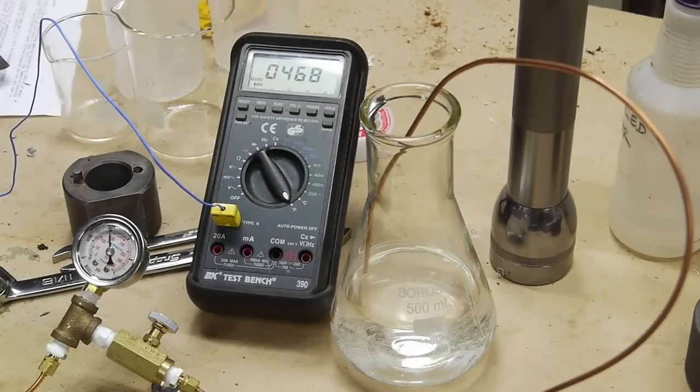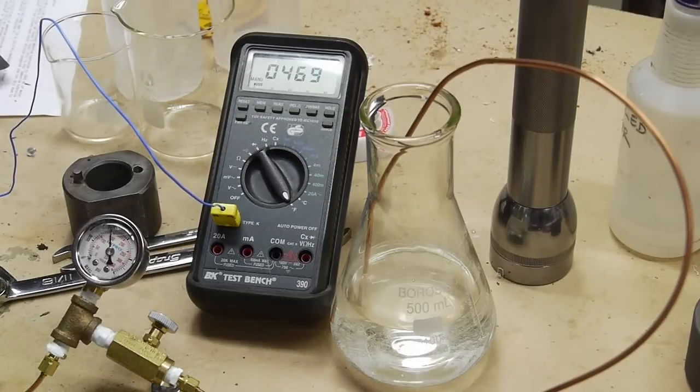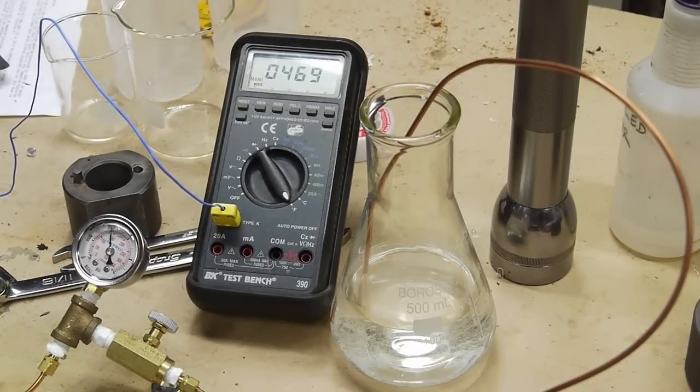After I reached the critical point, which is 460 degrees F at around 1200 psi for methanol, I started releasing the pressure and continued to apply heat to keep the temperature above 460 and allowed the pressure to come down slowly.